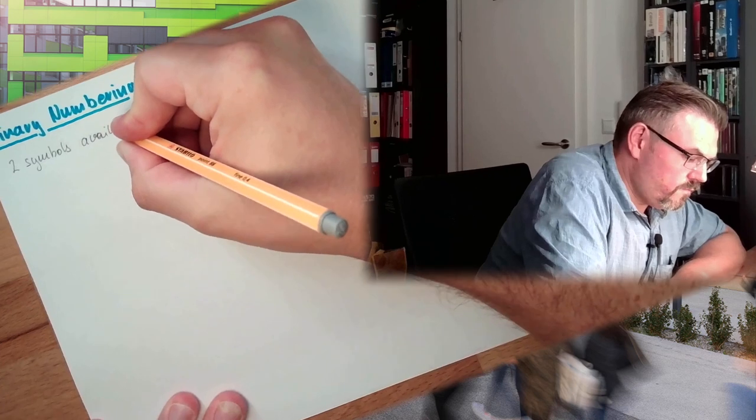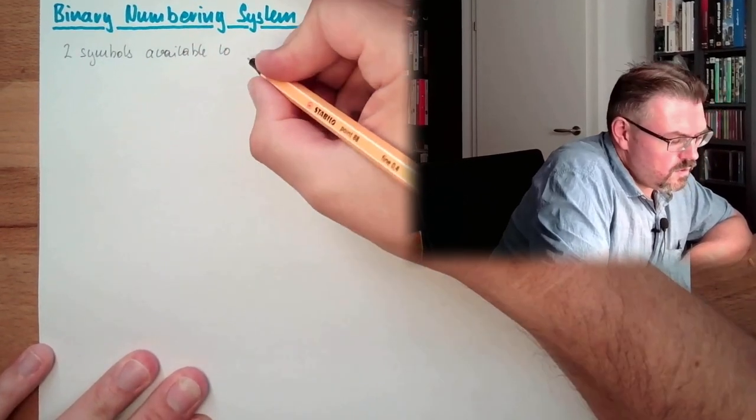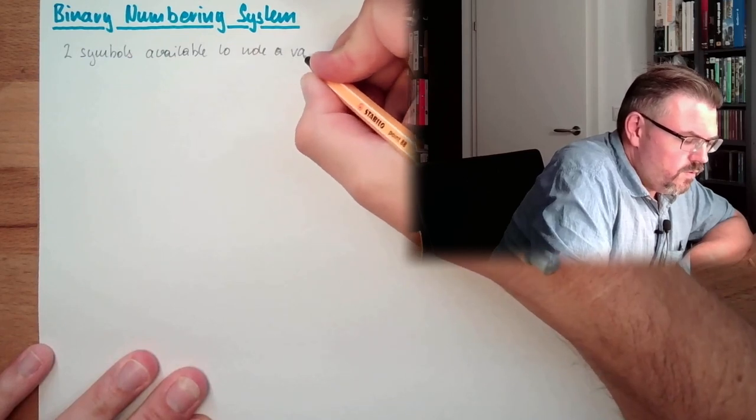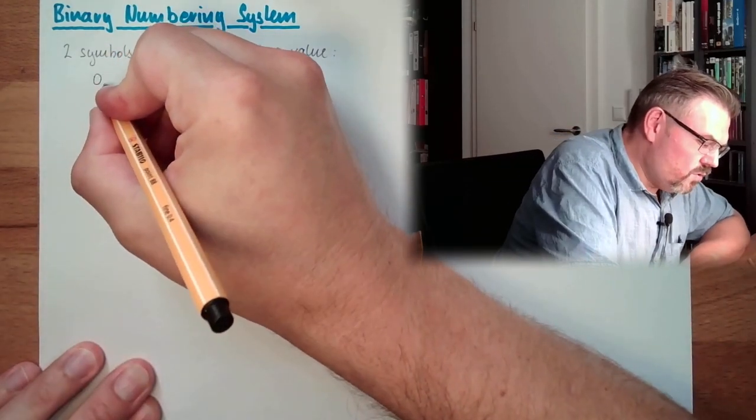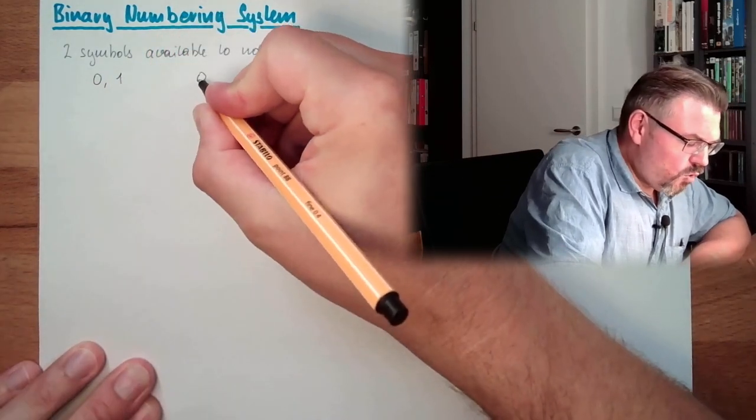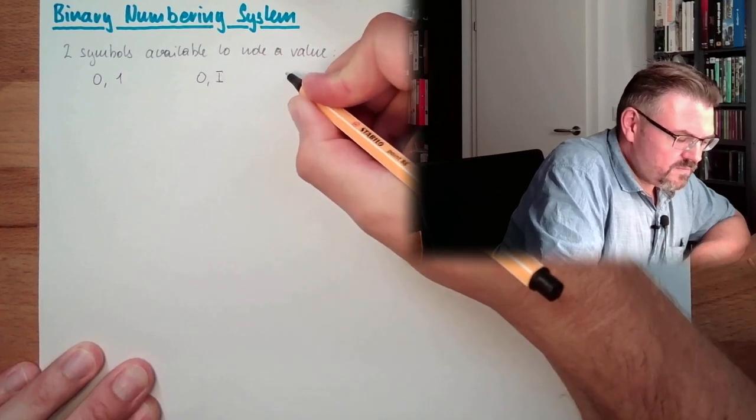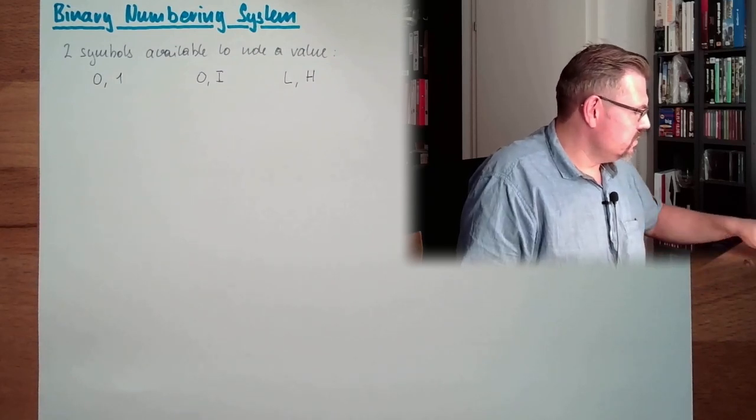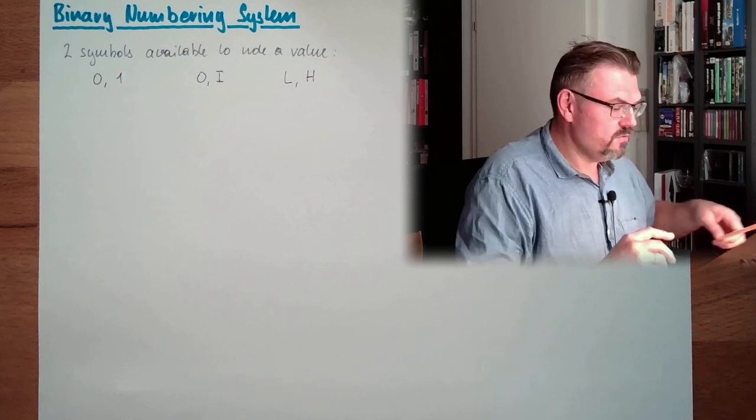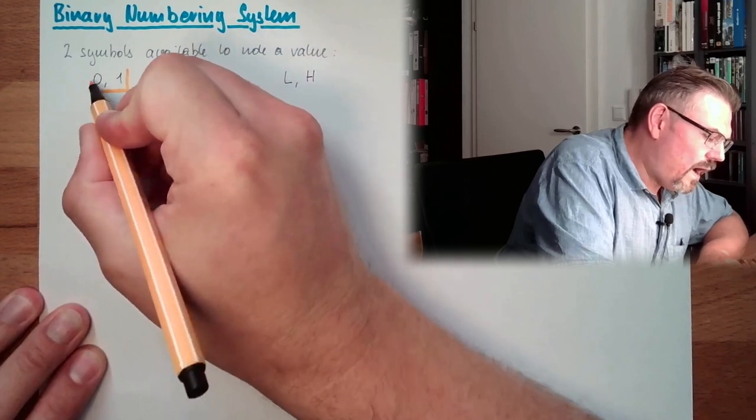The binary numbering system consists of two symbols. We have two symbols available to note a value. These two symbols are usually written as 0 and 1. Sometimes we also write O and I, or sometimes we also write low and high. However, this is the usual one, this one I am going to use right now in my explanation.